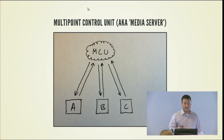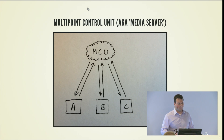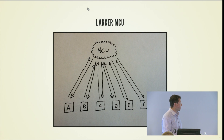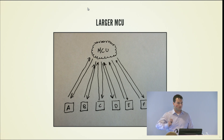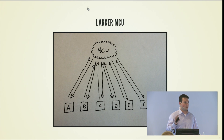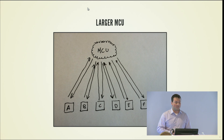There are open source ones that work pretty well and are self-contained. There are providers offering them as rentable servers, and then there are platform-as-a-service providers. When you get to a larger conference — back to our six clients — you'll notice that A through F still only have one stream going out and one stream coming in. The MCU takes care of all the processing and transcoding, with the exception of the one transcoding for each node to go from the network stream to the audio device.